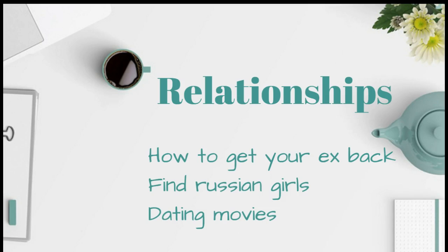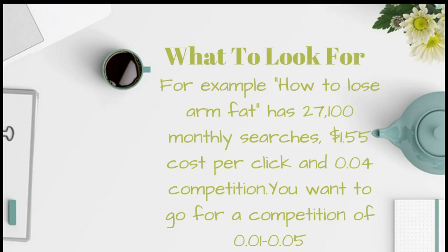For the relationship category, you could target something like how to get your ex back, or focus on Russian dating. Your main objective in the relationship category should be the dating section, because CPA networks and affiliate networks have a lot of digital products you can promote if you build a site around dating, relationships, and related topics. Just narrow them down as much as possible.